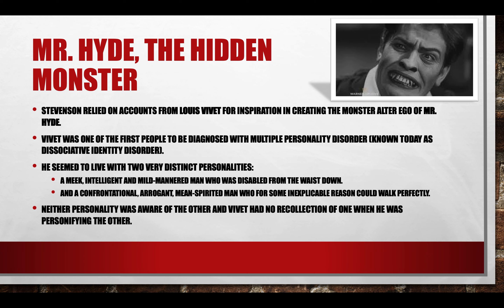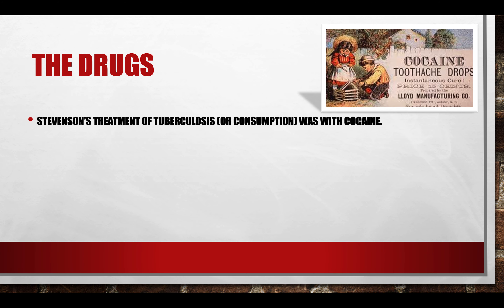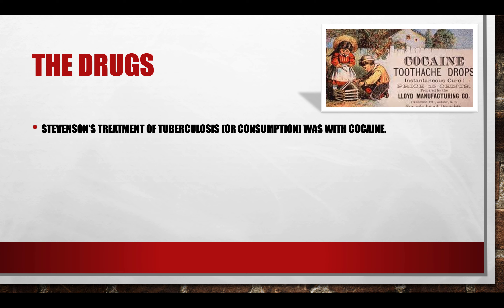Next we're going to look at the drugs which enabled Stevenson to complete his novella. Given our modern day knowledge of medicine and treatments, it would be shocking to consider the treatment of tuberculosis, or consumption, with cocaine. But in the 1880s, that is precisely the course of treatment administered. Stevenson had long battled the disease and was convalescing — which means healing — at home with a prescription for cocaine to ease his bleeding lungs. At the time he wrote what he considered his greatest work.